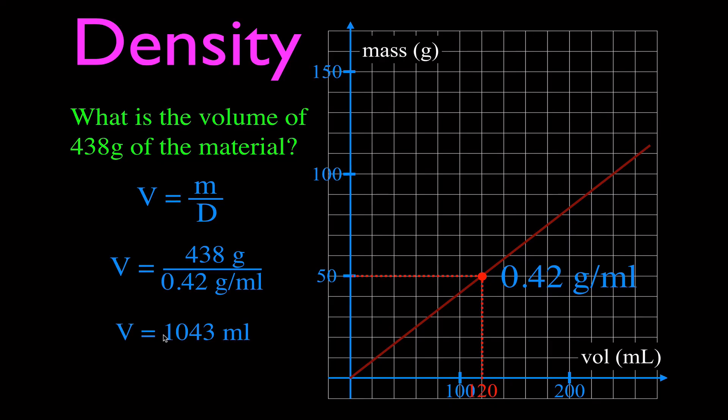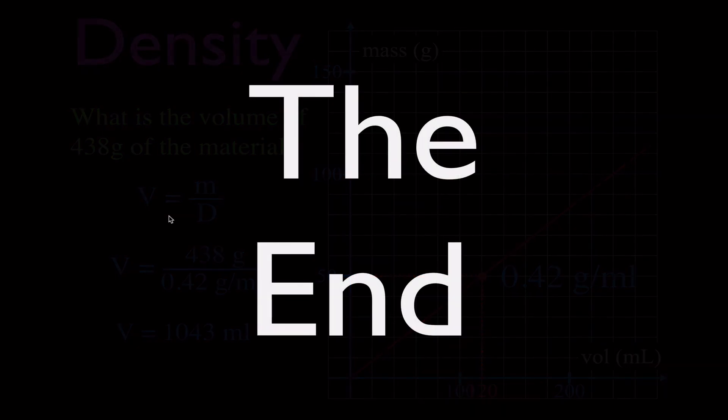So there you go. That is how you can make a density graph, draw the best fit line, calculate the density, and read values off the graph. You can also be given a line on a graph, get the density, and calculate values outside the graph. Thank you very much for watching — hope you found that video helpful. Please subscribe to my channel to get all my excellent physics, chemistry, and math videos, give me a thumbs up, leave a nice positive comment, and share this video. We'll see you in the next video.